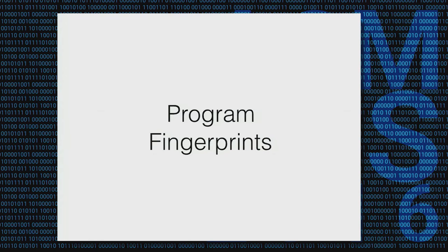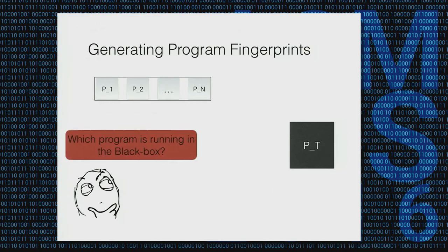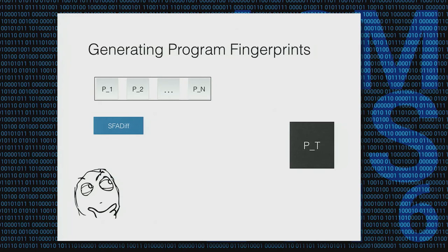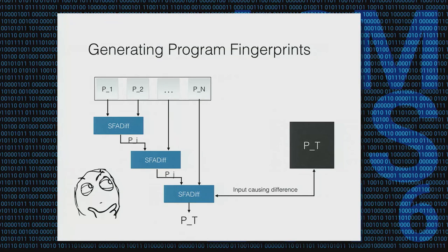One last thing before evaluation: how we can use this framework to produce program fingerprints. We have a black box remote server running some program, and a list of candidate programs. We want to know which one is running on the target server — for example, which web application firewall is running. We run SFA-DIF on pairs of programs, generate an input causing a difference between them, send it to the target server, and based on the answer, exclude one of the two candidates. We keep going until we identify the target program.